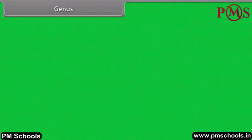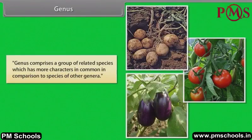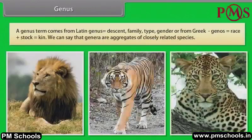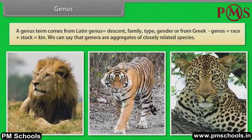Genus comprises a group of related species which has more characters in common in comparison to species of other genera. The genus term comes from Latin 'genus' meaning descent, family, or type, or from Greek 'genos' meaning race or stock, which is kin. We can say that genera are aggregates of closely related species.